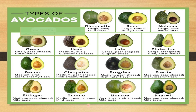There are several varieties. First is Choquette, which is large oval with mild taste; then Reed, which is large round with nutty flavor; then Maluma, which is large oval with nutty taste; then Gwen, which is small pear-shaped with nutty flavor; then Hass, which is medium oval with superior rich taste.